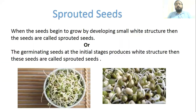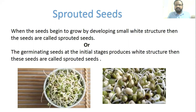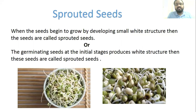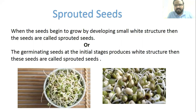Our next topic is sprouted seeds. When seeds begin to grow by developing small white structures, the seeds are called sprouted seeds. In other words, germinating seeds at the initial stages that produce a white structure are called sprouted seeds.